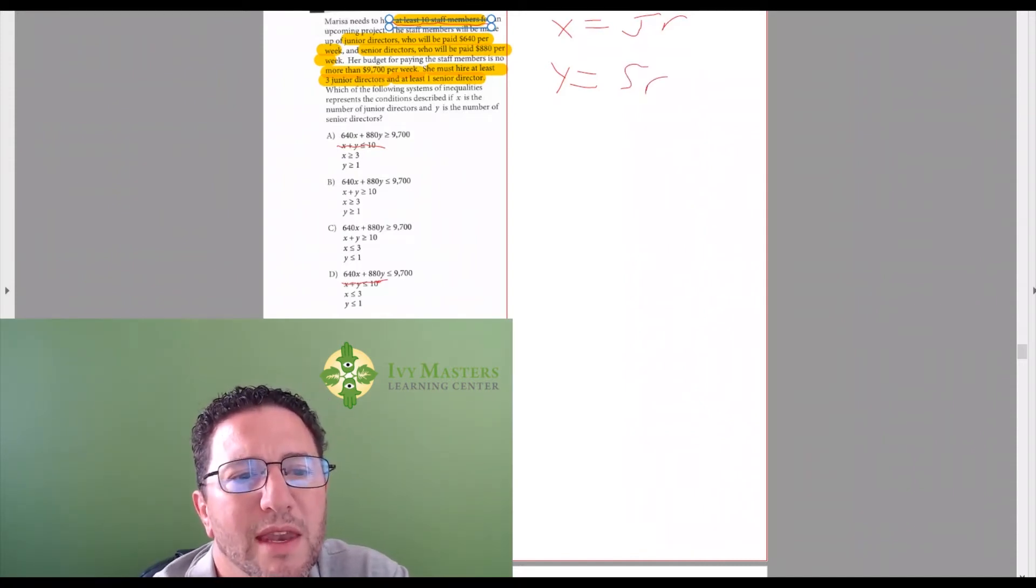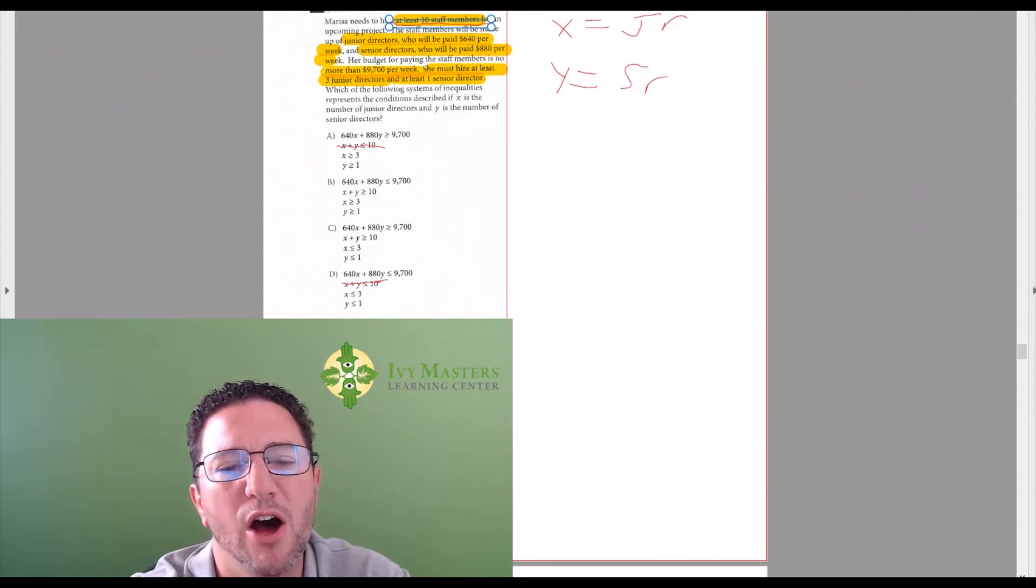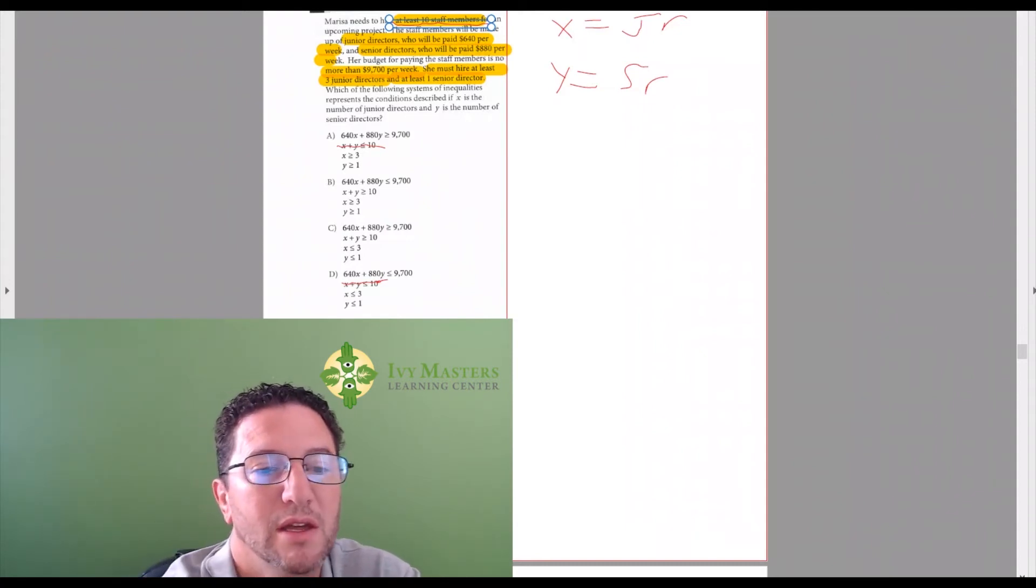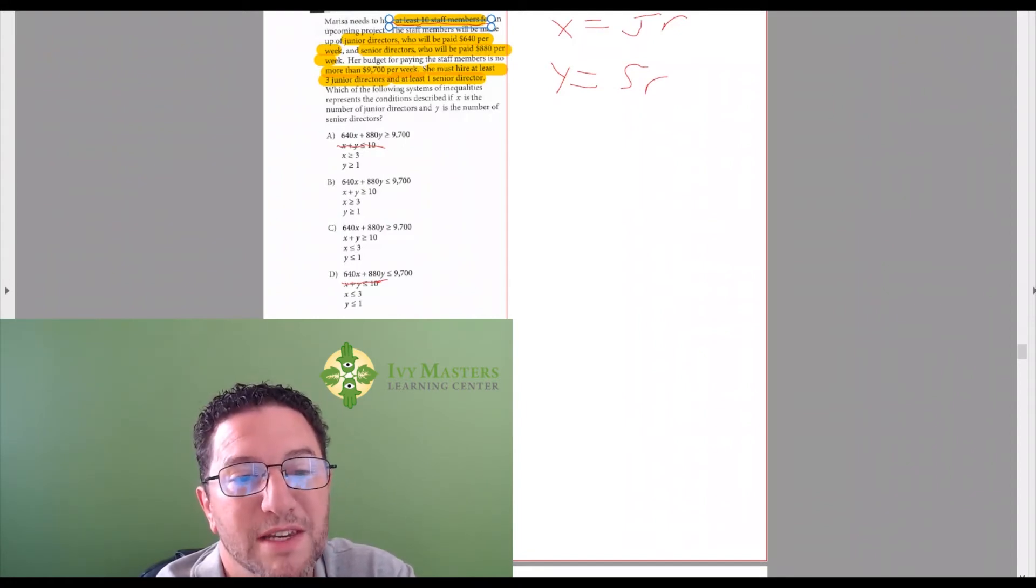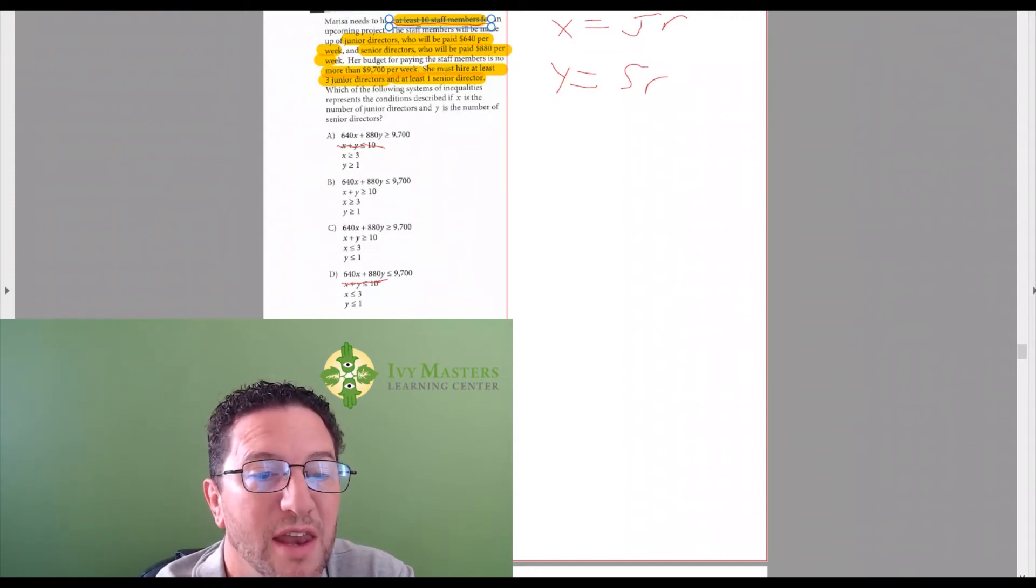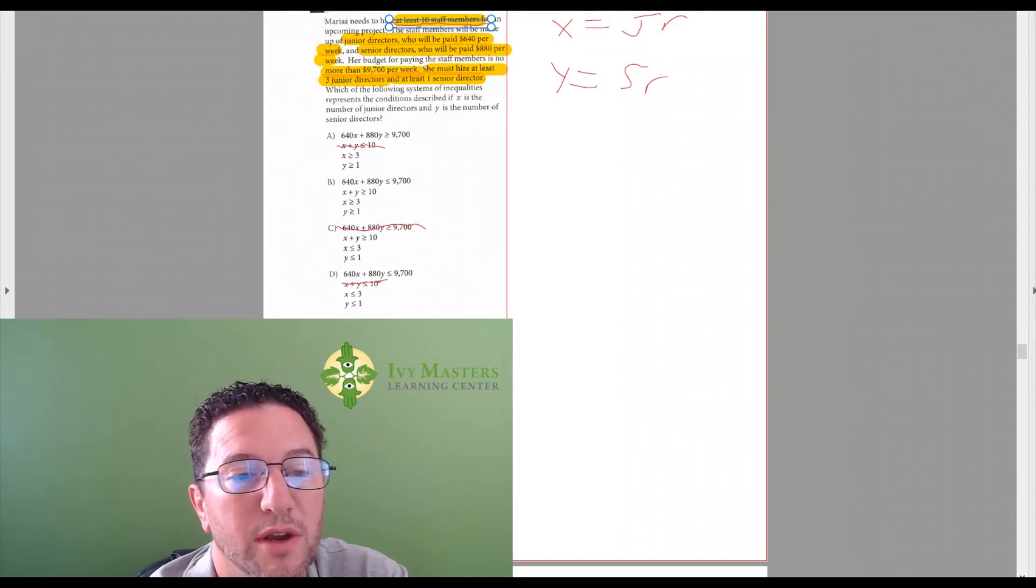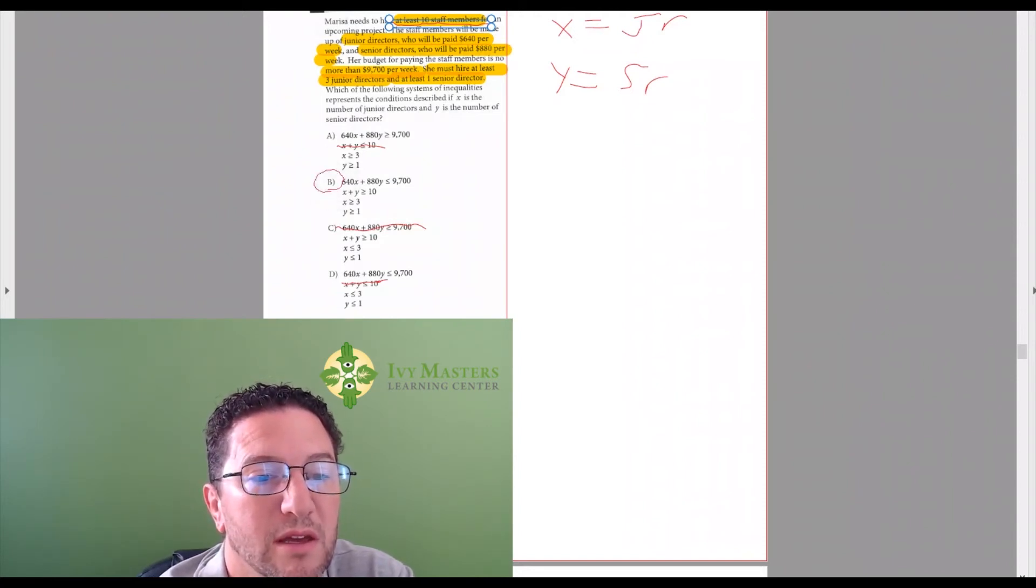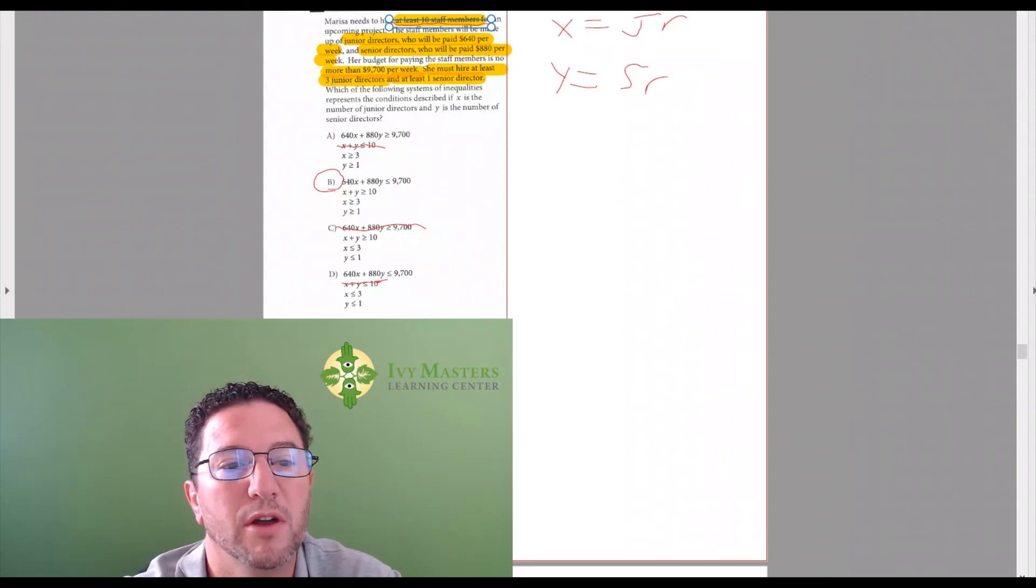And then it says her budget for paying staff members is no more than. If it's no more than, then you've got to stay under a certain amount. And you can tell that answer choice C, if you paid them like $100 each, then that's not okay. And that works for answer choice C. If you paid $100 an hour each answer choice B, it does not work when you pay $100 per hour each.